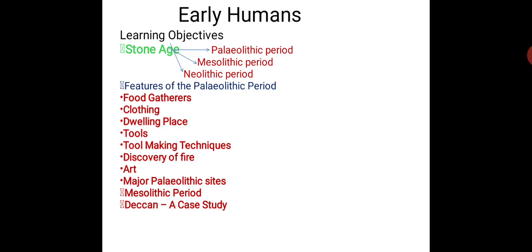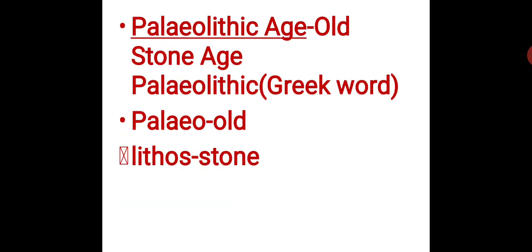As you all know, the stone age was divided into three periods based on the quality of stones they used to make their tools: the Paleolithic period, Mesolithic period, and Neolithic period. The Paleolithic age is also known as the old stone age. The term Paleolithic is derived from the Greek words paleo, which means old, and lithos, which means stone.